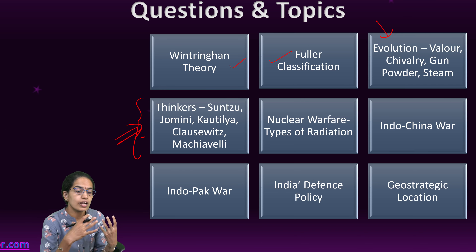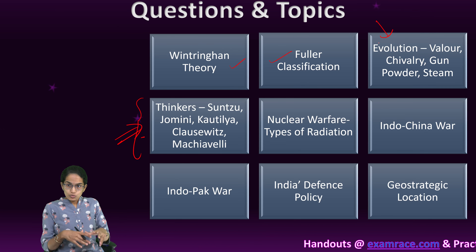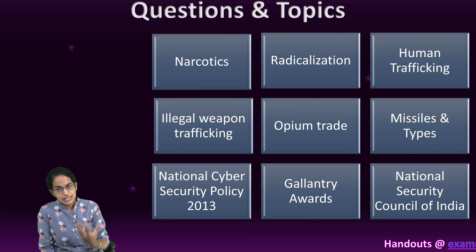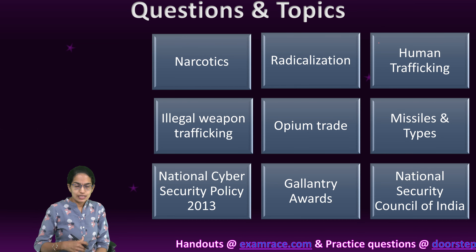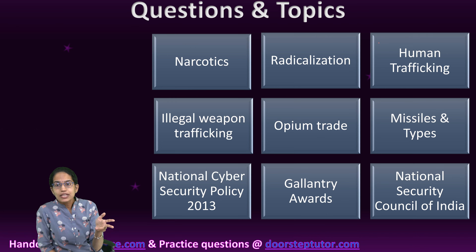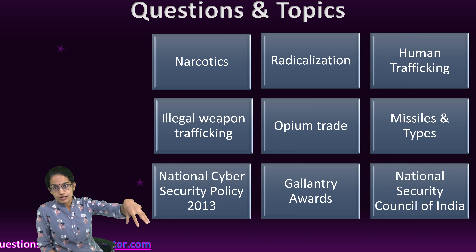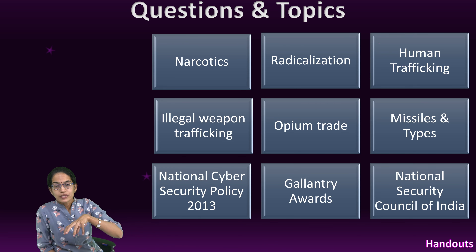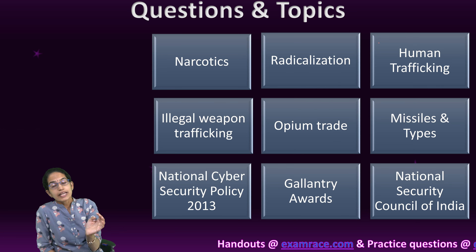The theory of heartland and rimland is important. When it comes to India, India's defense policy — the Defense Policy 2013 — is important. Then we have geostrategic locations and the various agencies involved in development. Coming to some indigenous issues: opium trafficking, human trafficking, illegal weapons trafficking, narcotics trade — the narcotics cases we recently saw — and the types of missiles and various gallantry awards.